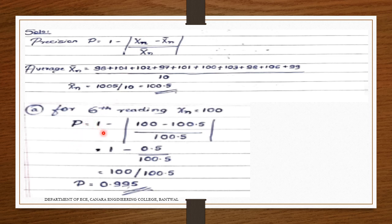For the 6th reading, x_n = 100. Precision: p = 1 minus |100 minus 100.5| / 100.5. The difference is −0.5, but we take the mod, so it becomes 0.5. Thus p = 1 minus 0.5/100.5 = (100.5 minus 0.5)/100.5 = 100/100.5 = 0.995.